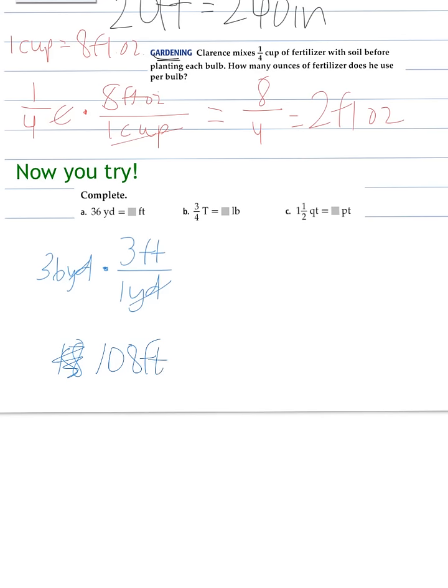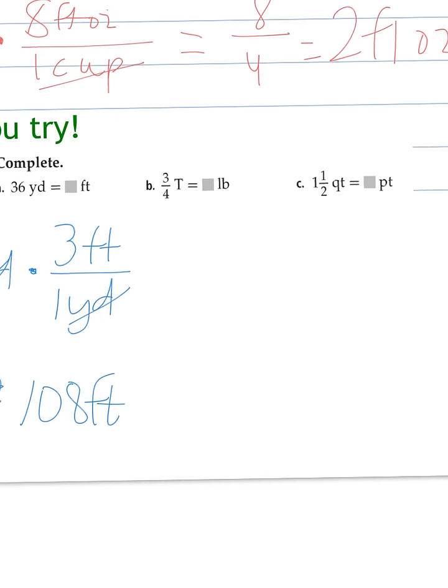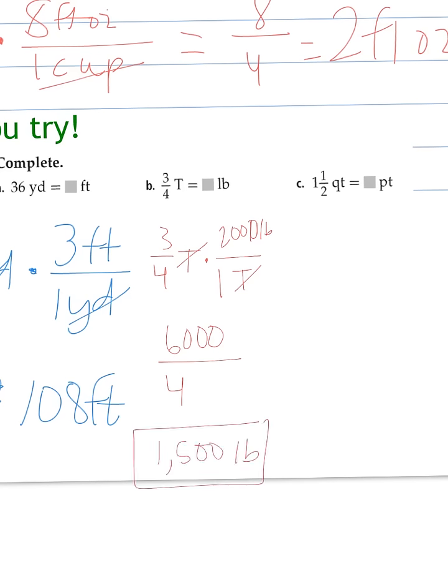Next one, three-fourths of a ton is how many pounds? So I take my three-fourths of a ton times the unit ratio. Well, there are 2,000 pounds per one ton. My tons cancel. So now I multiply. 2,000 times three is 6,000 over four. 6,000 divided by four is 1,500. And we have the pounds. So there is our answer. Three-fourths of a ton equals 1,500 pounds.